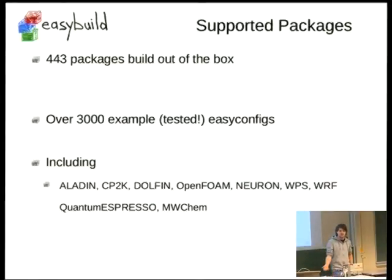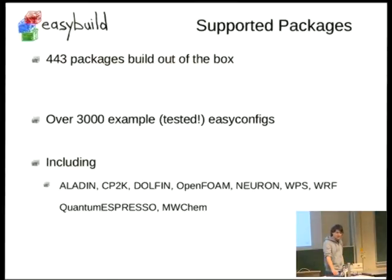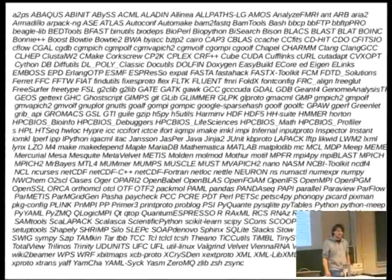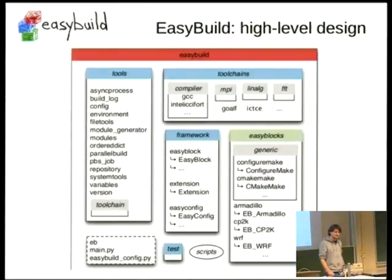Currently, 443 packages are in our public inventory. In the last release, we had over 3,000 EasyConfigs — many different versions and different toolchains. This includes several very hard-to-build software packages. We were here last year as well — that list was around 150 packages, so in one year we added another 300. So let me explain how the modules and software are designed.